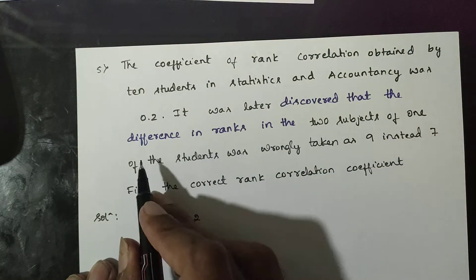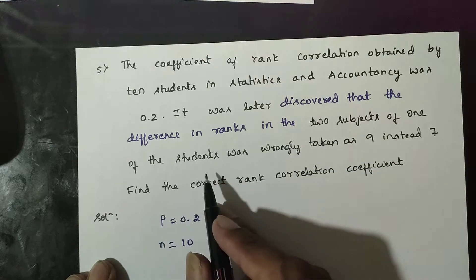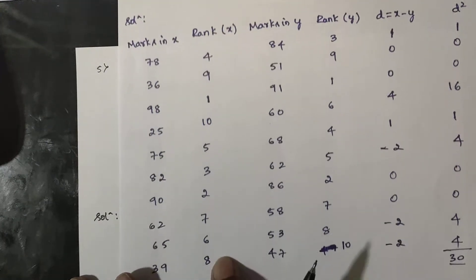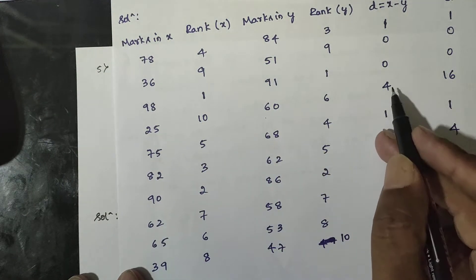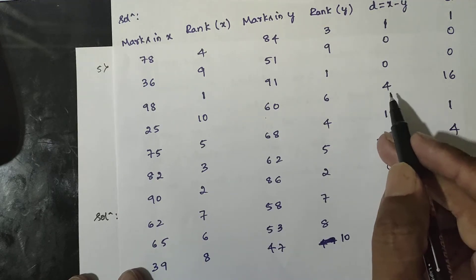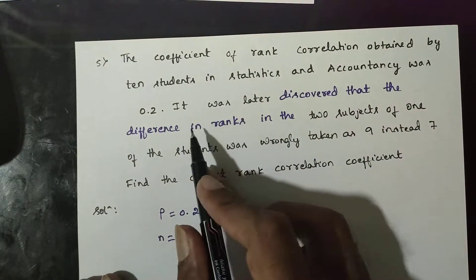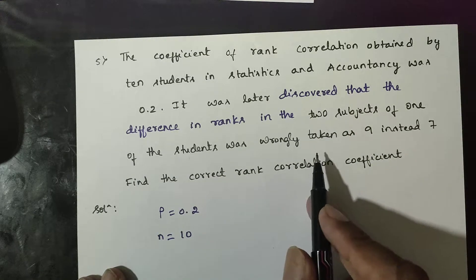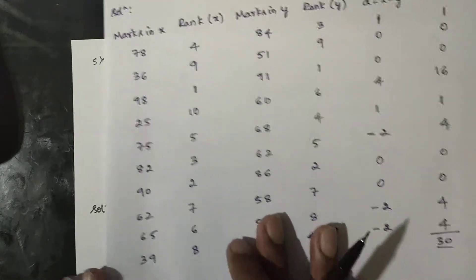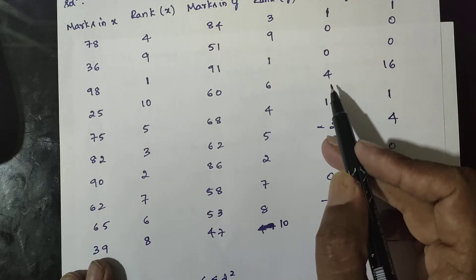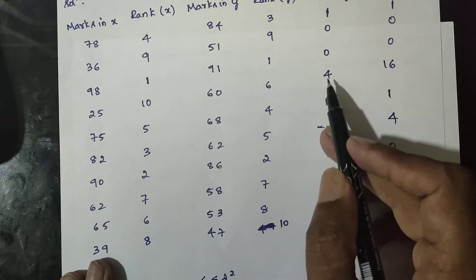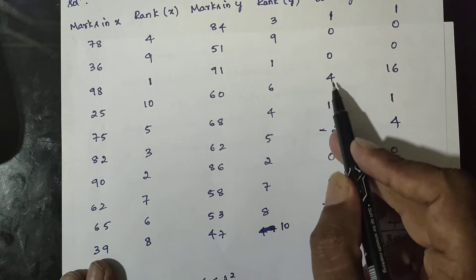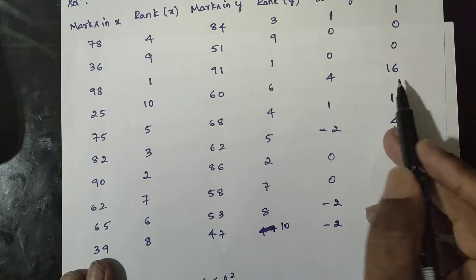It was later discovered that the difference in ranks in the two subjects of one of the students was wrongly taken as 9. The difference values noted are 4, 5, and 25. Here is the summation of d².